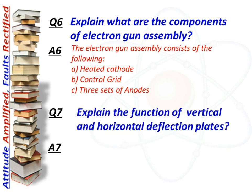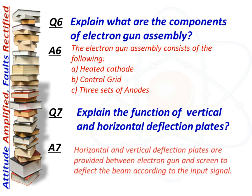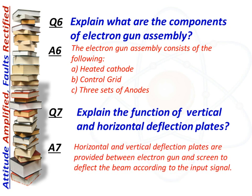Next question: explain the function of vertical and horizontal deflection plates. Answer: Horizontal and vertical deflection plates are provided between the electron gun and the screen to deflect the beam according to the input signal.